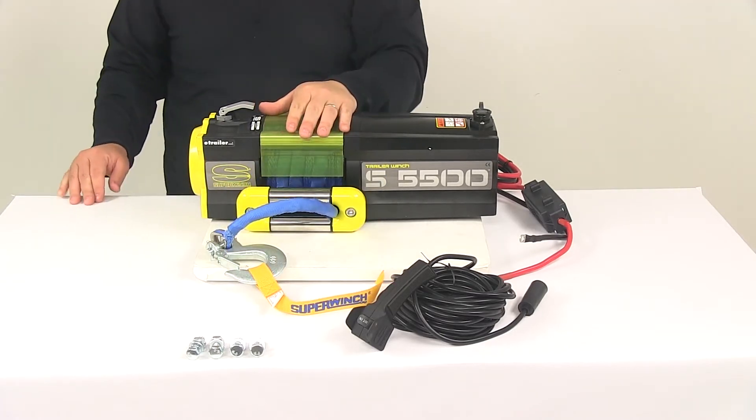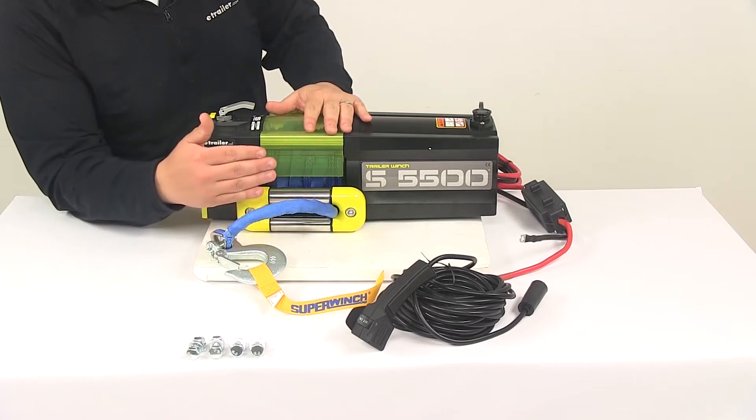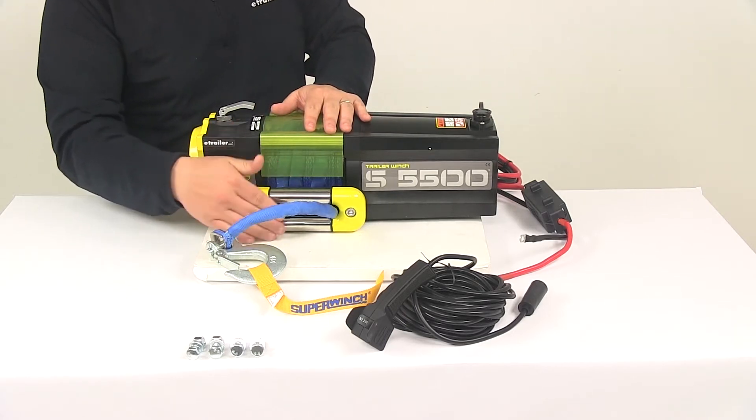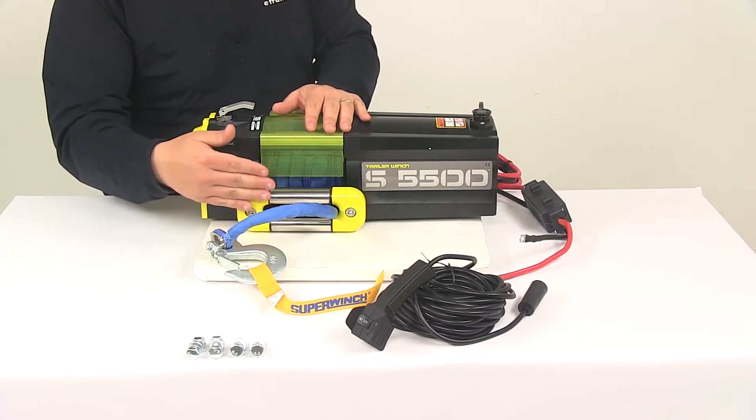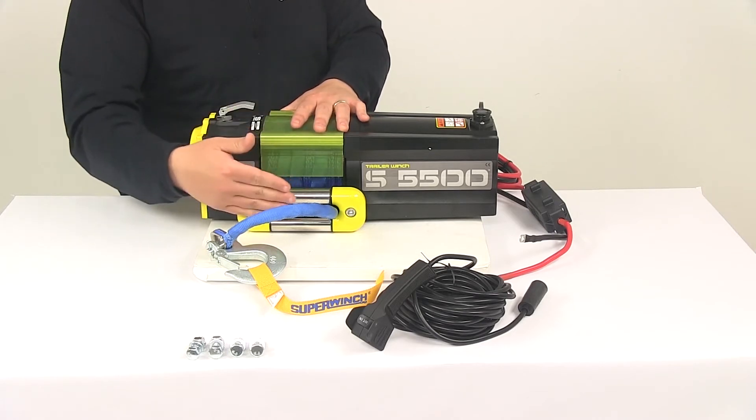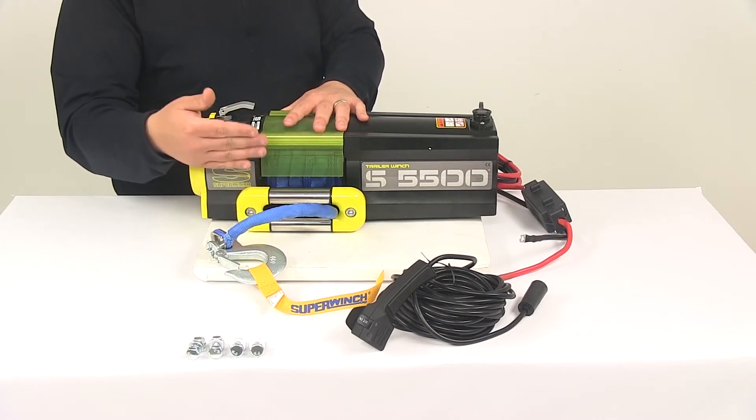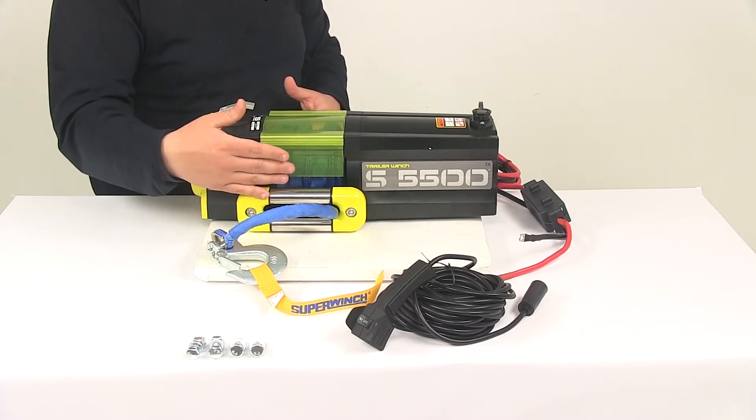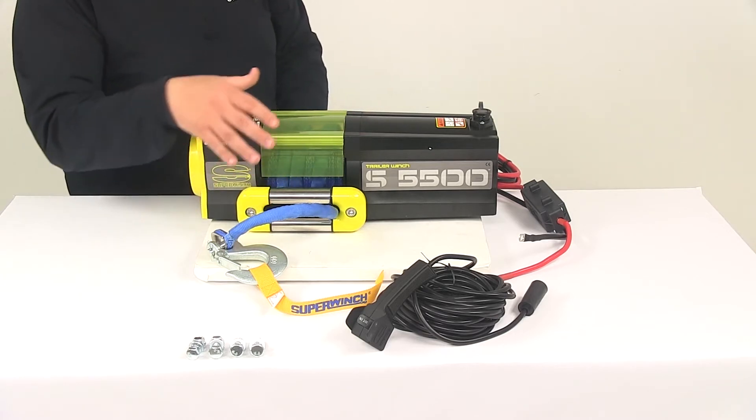The synthetic rope is protected really well. We have the Hoss fairlead right here with stainless steel rollers. That protects the rope from wear and tear and helps with re-spooling back around the drum correctly.